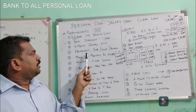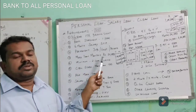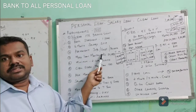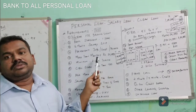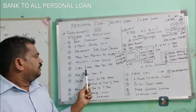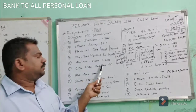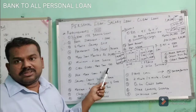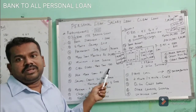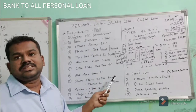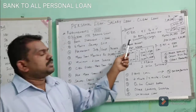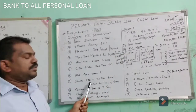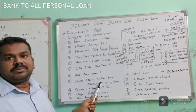Your net take-home salary must be more than ₹20,000. Your job must be permanent — whether government or private — with at least two years of completion. Your CIBIL score must be more than 700; only then will you be eligible. If your score is less than 700, the rate of interest will be somewhat higher. Also, salary credited in bank account — bank statement must be there.